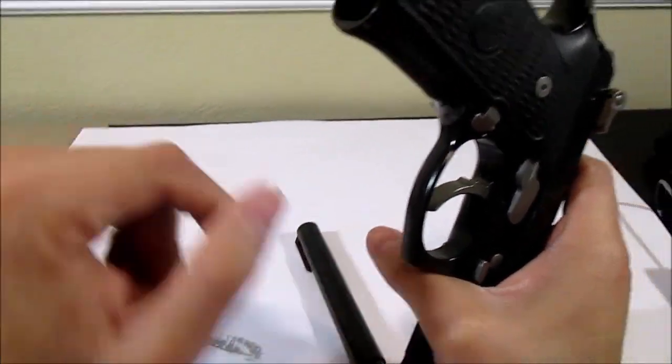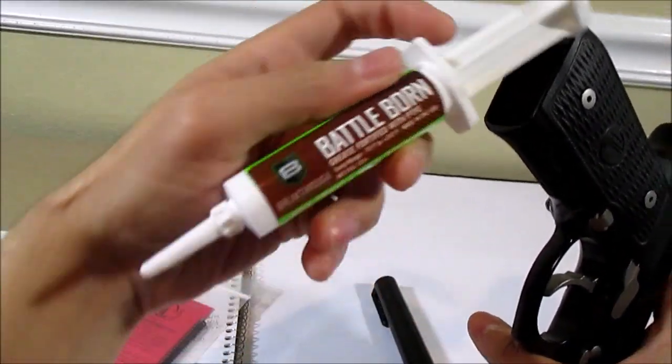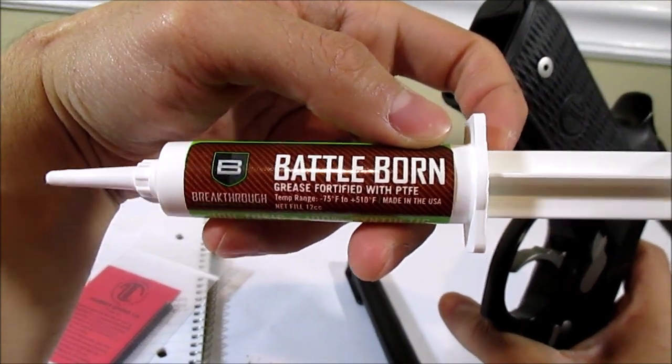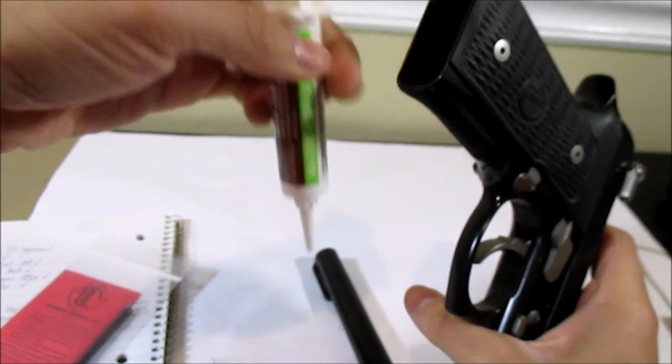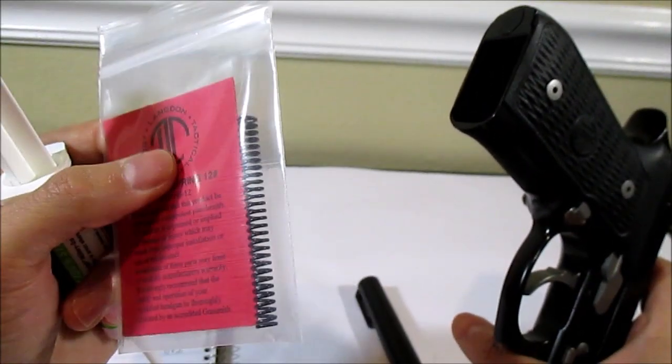And so when I put in the 12-pound spring I did also put a little bit of this Battle Born grease I got on Amazon and put this on the 12-pound spring in the same spots where I saw the grease on the Model D spring.